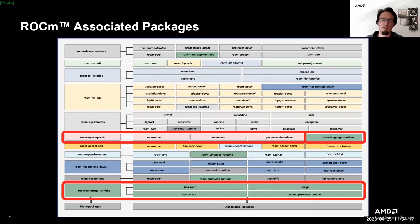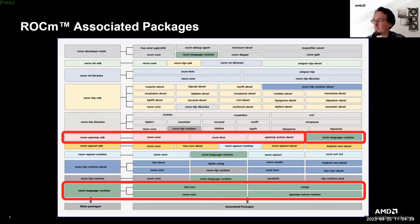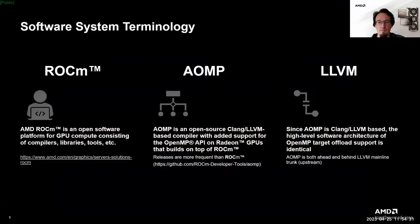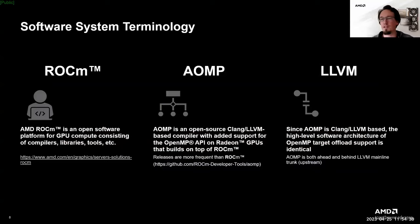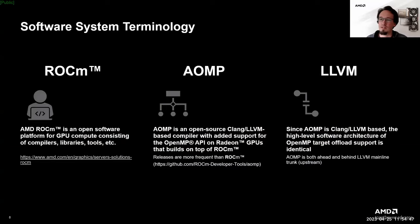Since I talk a lot about ROCm and sometimes mention AOMP, let's look at the two and understand what they are, how they relate to each other, and also how they relate to LLVM. In my vocabulary, ROCm means specifically the AMD open source platform for GPU compute. It consists of all the libraries and tools and is the thoroughly tested, released product by AMD.